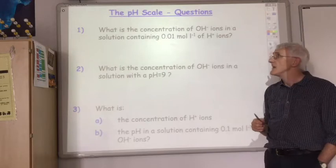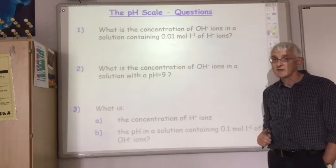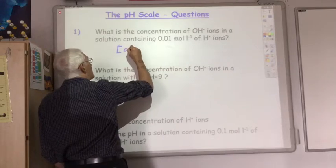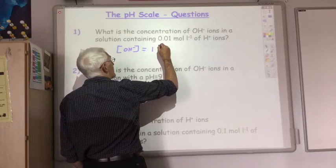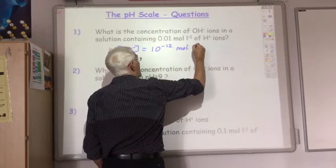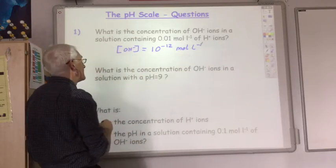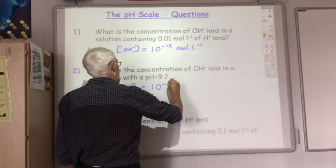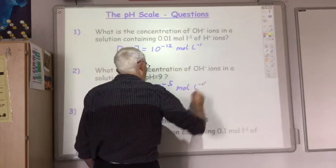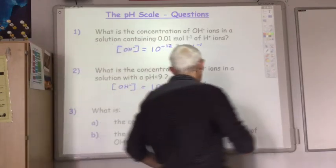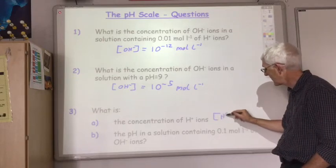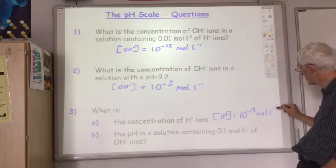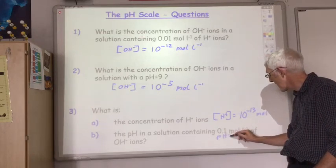Pause the video now and try these three calculations. For the first question, the concentration of the hydroxide ions should be 10 to the minus 12 moles per litre. For the second question, the concentration of the hydroxide ions should be 10 to the minus 5 moles per litre. For the third question, the concentration of the hydrogen ions should be 10 to the minus 13 moles per litre, giving a pH of 13.